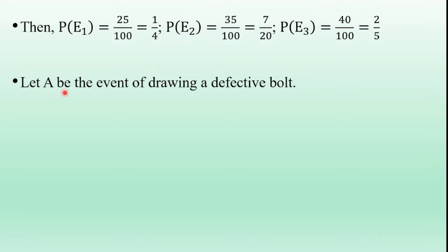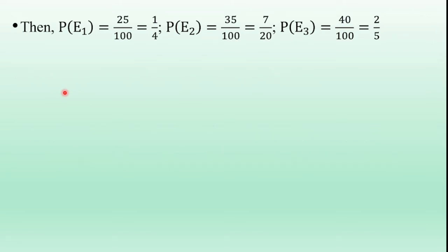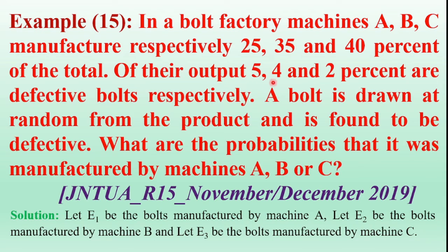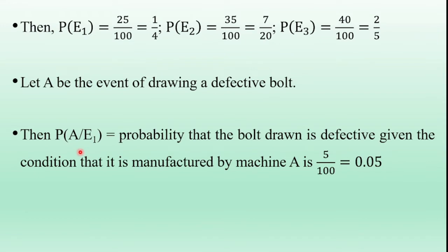Let capital A be the event of drawing a defective bolt. Of their outputs, 5%, 4%, and 2% are defective. Using the conditional probability concept, P(A|E1) is the probability that the bolt is defective given that it is manufactured by machine E1. So P(A|E1) = 5/100 = 0.05. Capital A is the event of drawing a defective bolt.